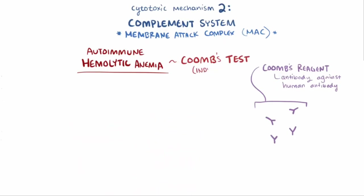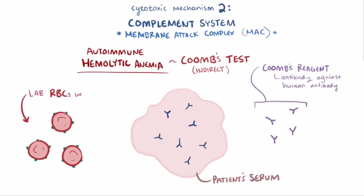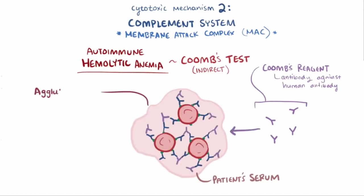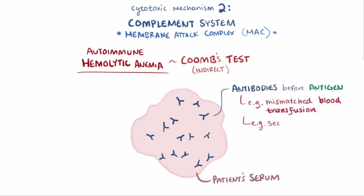Besides a direct test, there's also an indirect Coombs test, which is usually done to check for blood group incompatibility. For an indirect Coombs test, the patient's serum is mixed with laboratory red blood cells that have known antigens on their surface, and then mixed with Coombs reagent. If there is red blood cell agglutination, that indicates the presence of antibodies or complement in the serum. The indirect Coombs test is done to determine if you have antibodies before you're exposed to the antigen — for example, in a mismatched blood transfusion, or a second pregnancy with a mismatched Rh factor between the mother and the child.